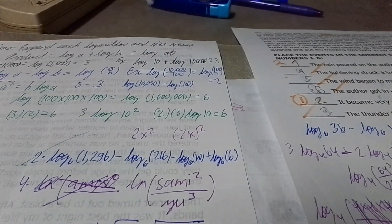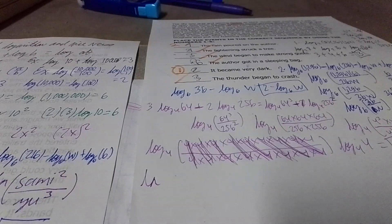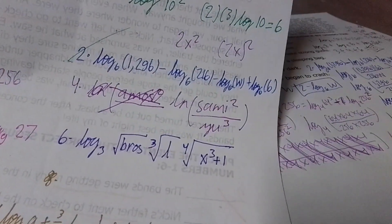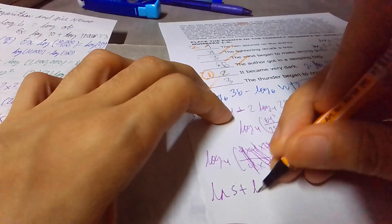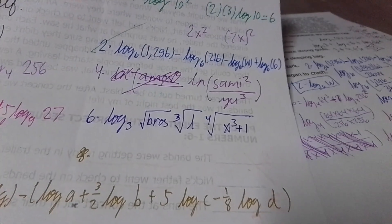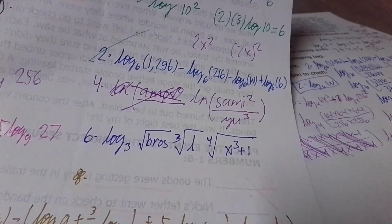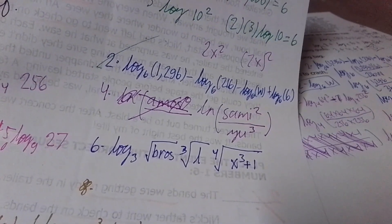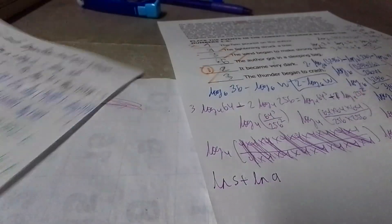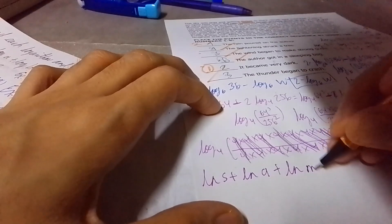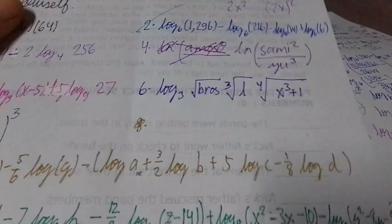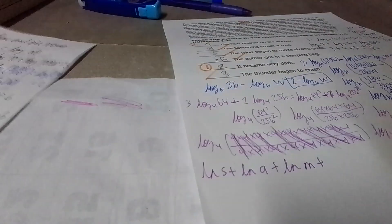Going back to expanding the logarithmic equation: we write LN of S plus LN of A plus LN of M plus LN of I squared. Since I has an exponent, we apply the power law — the 2 slides down, making it 2 times LN of I.